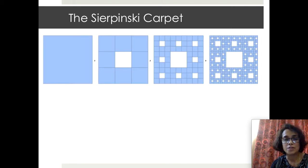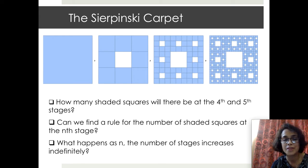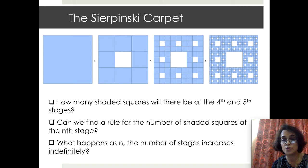Here is another interesting fractal named after Sierpiński — the Sierpinski carpet. We start with a single square, trisect the sides, and join opposite points of trisection, leading to nine smaller squares. We remove the center square, leaving eight squares. On each of these eight squares we continue the process of trisecting and removing the center square. What you can see are stages zero to three of the Sierpinski carpet. Again we can ask: how many shaded squares will there be at the nth stage, and what is the shaded area at the nth stage?